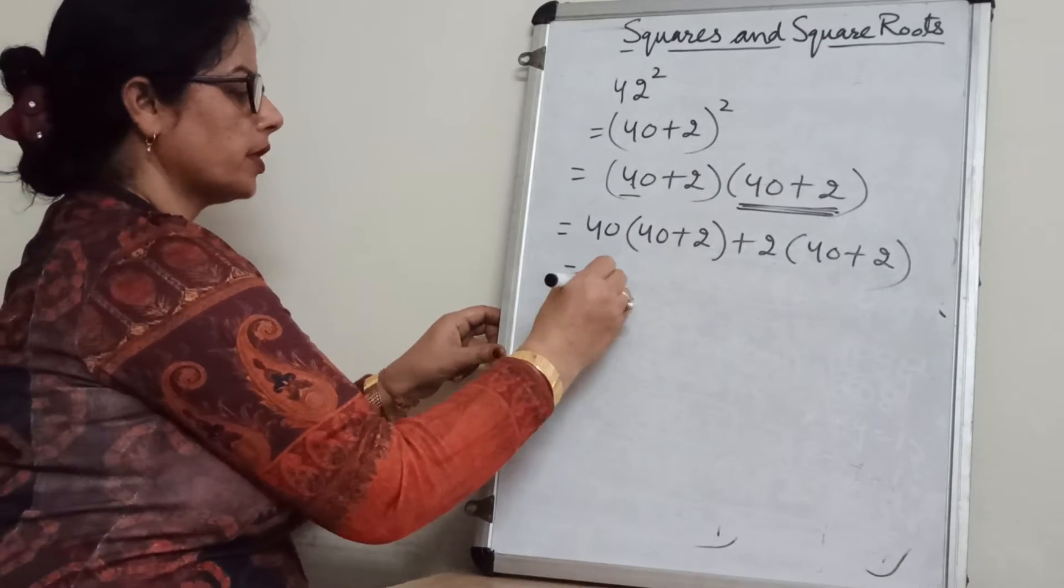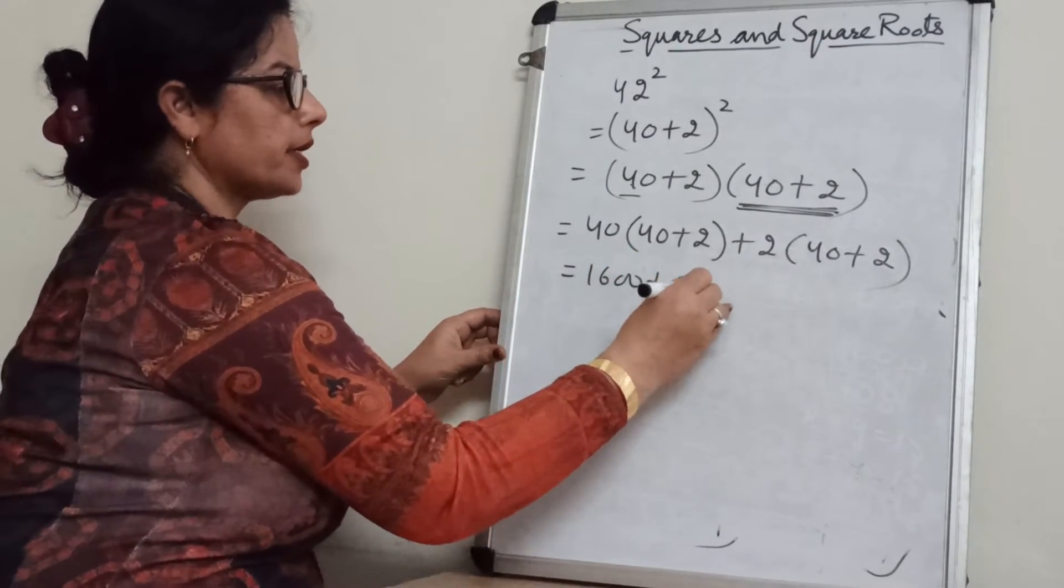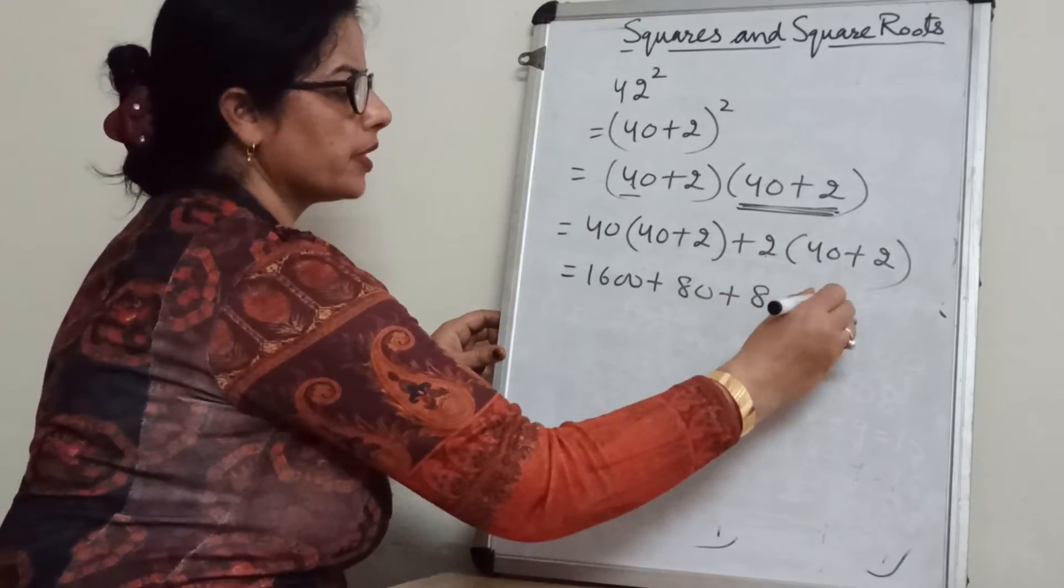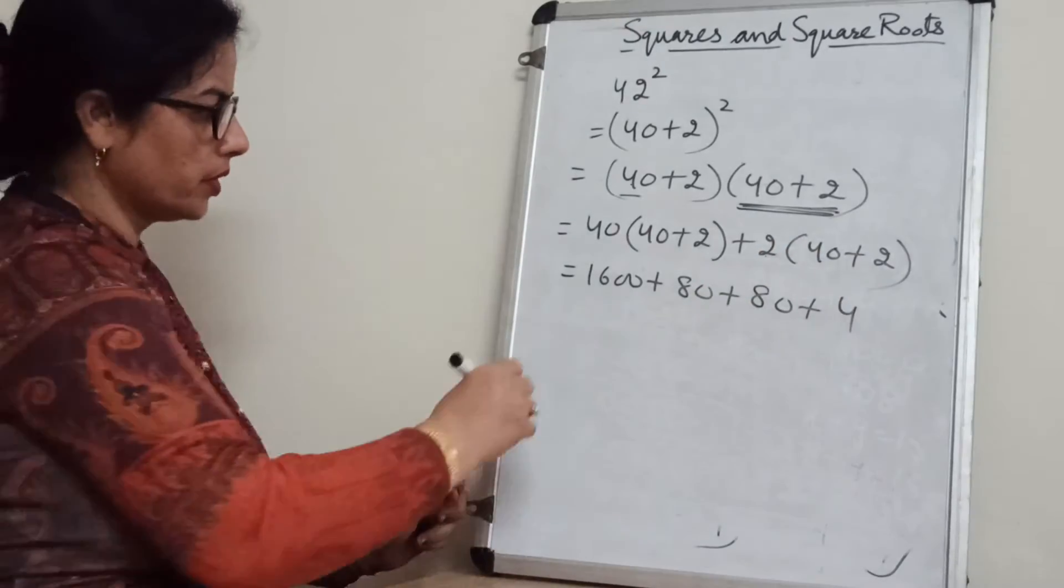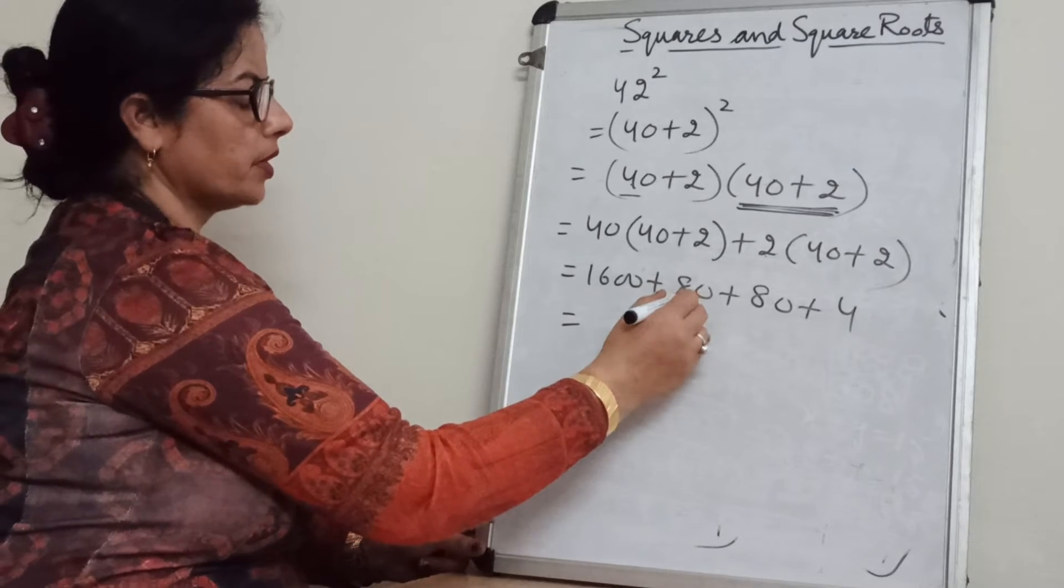4 into 4 is 16, 100 plus 80. 40 into 2 is 80. Plus 2 into 2 is 4. Now add this. What you will get?